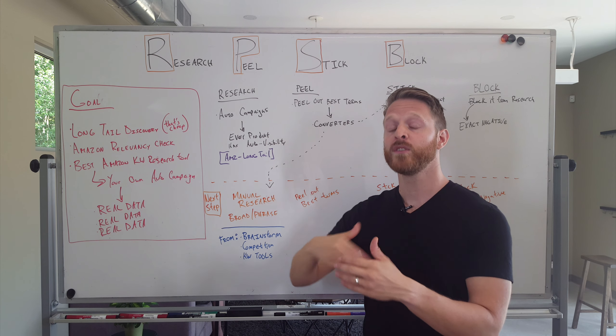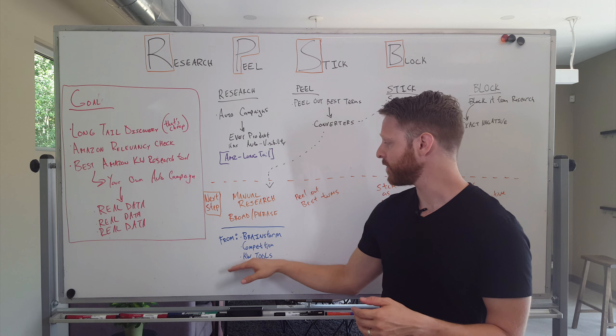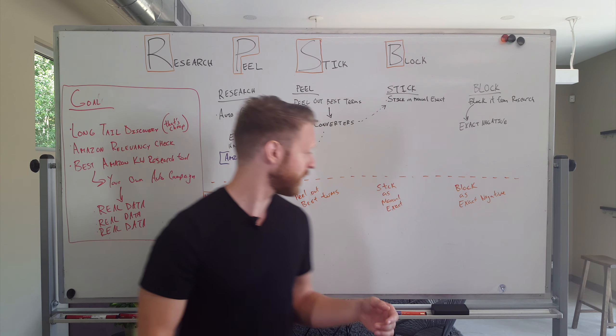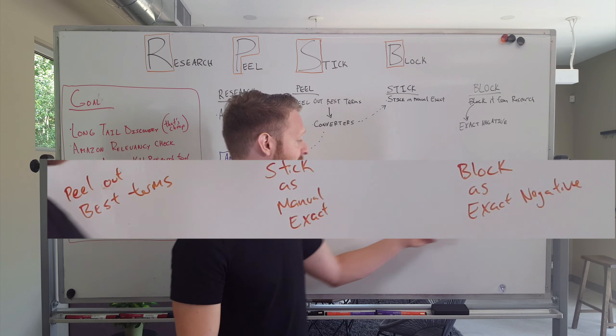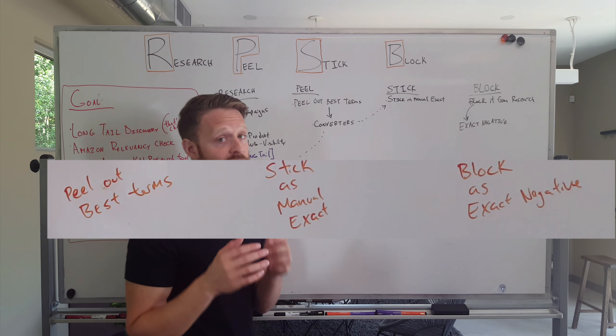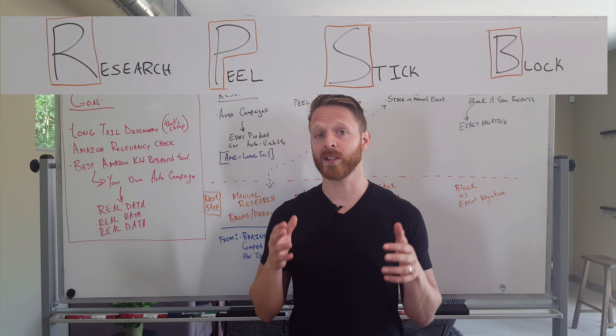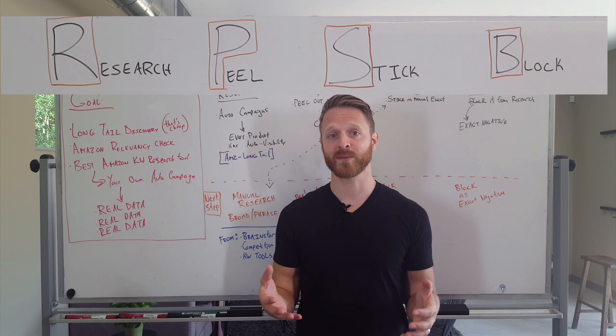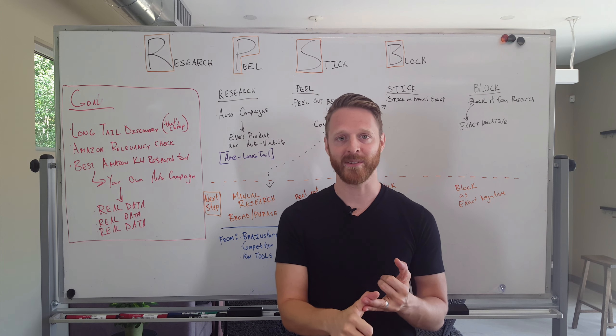So you still want to do the Research, Peel, Stick, and Block method. So again, you peel out the best terms, you stick them as a manual exact match sort of winner's circle, and then you block it from here as an exact match negative. This is Research, Peel, and Stick, and Block. This is something that should be done perpetually in your Amazon PPC account, and it is the best way to find new keywords and reward the best keywords.